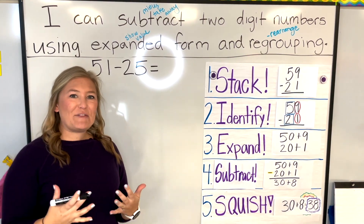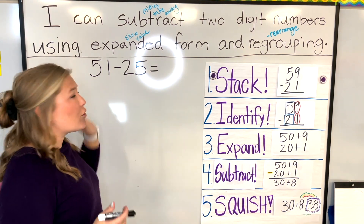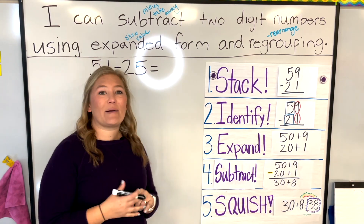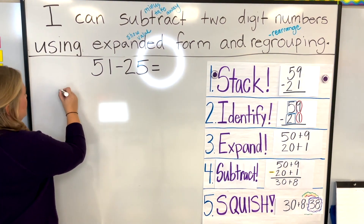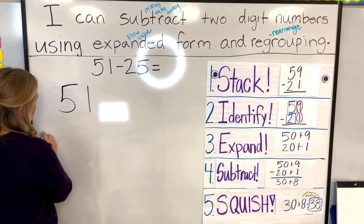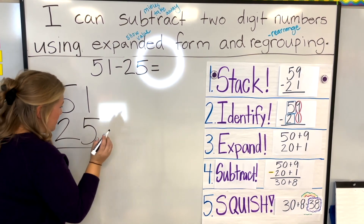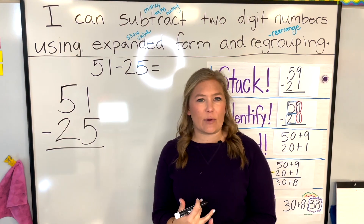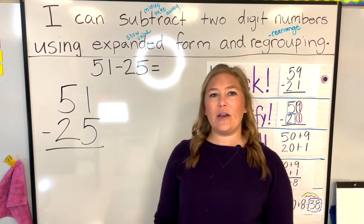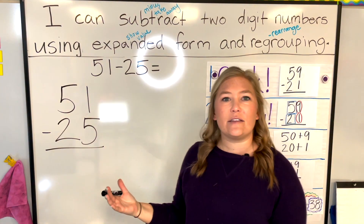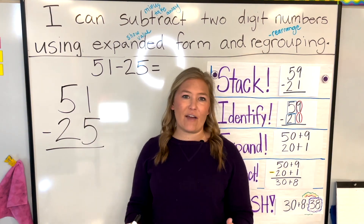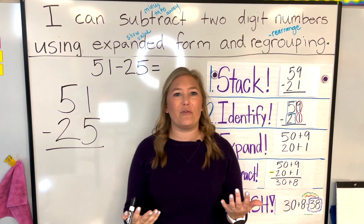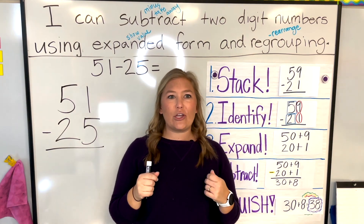Our first problem today is 51 minus 25. I notice that my bigger number is coming first — in a subtraction problem, we always want the bigger number first. I'm going to go ahead and stack it up, because that's my first step. After stacking, we've been identifying by putting squares around our tens place and circles around our ones place, but this week I want to take that step out and just identify by looking. I see a five in my tens place, a one in my ones place, a two in the tens place of 25, and a five in the ones place.